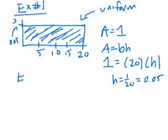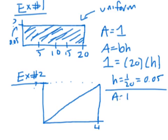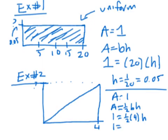Going back to the uniform density curve example: the base is 20, the height is 0.05. You might be asked what percent of observations are less than 7. The key fact is that the area under a density curve equals the percent of observations. So shading under the curve from 0 to 7 gives a rectangle with area 7 times 0.05, which equals 0.35, or 35%.